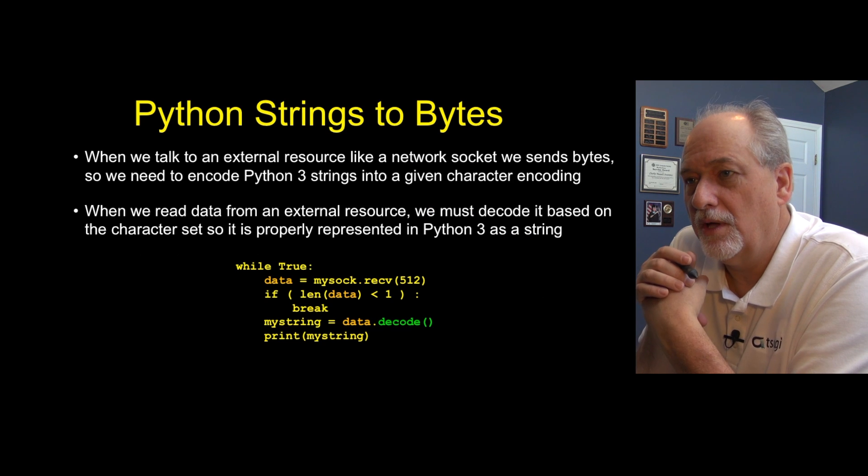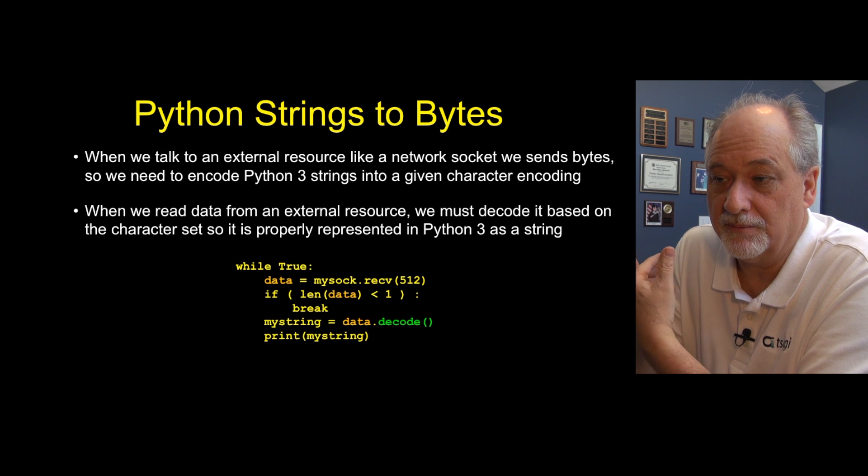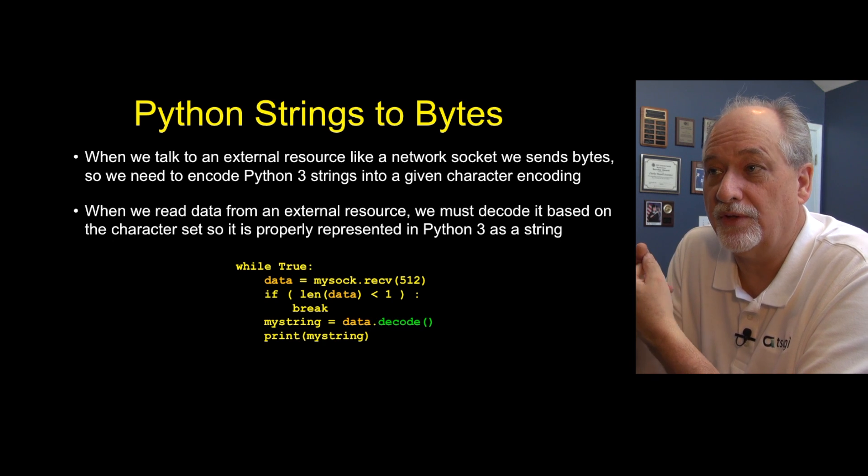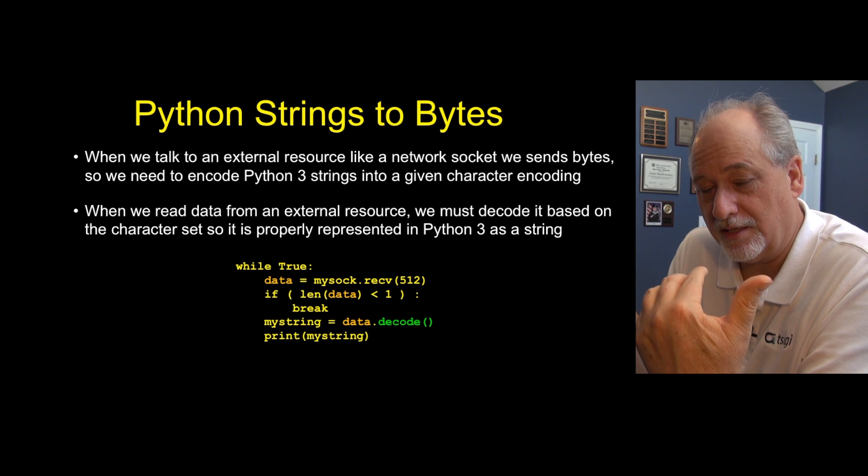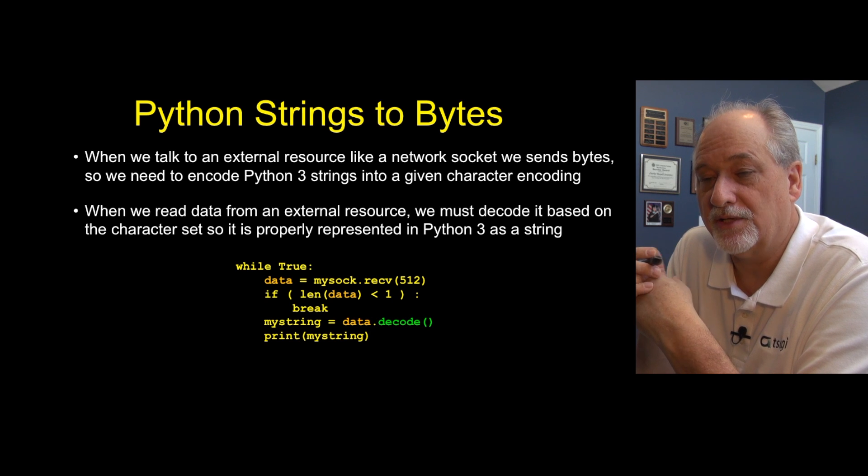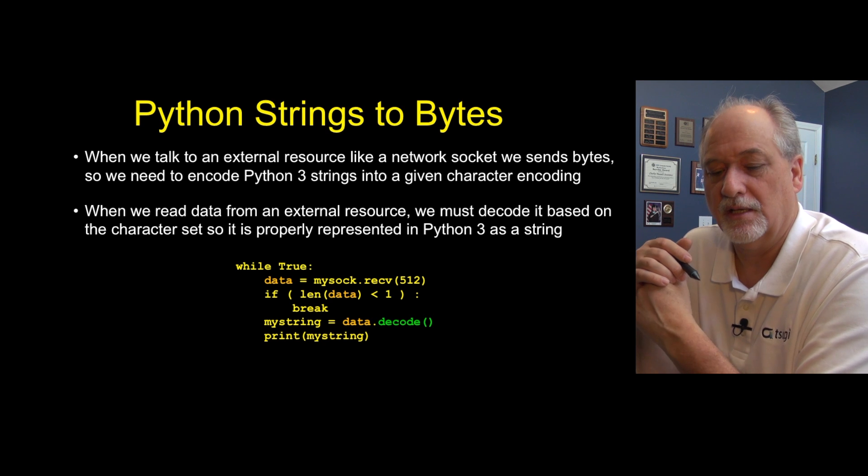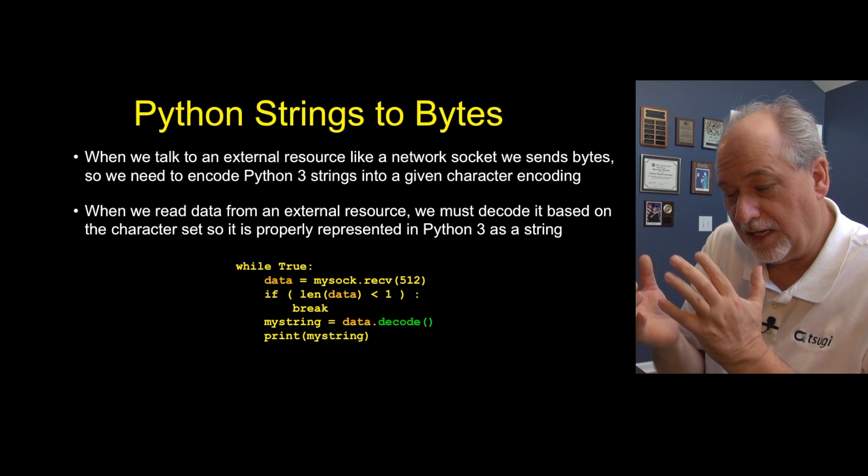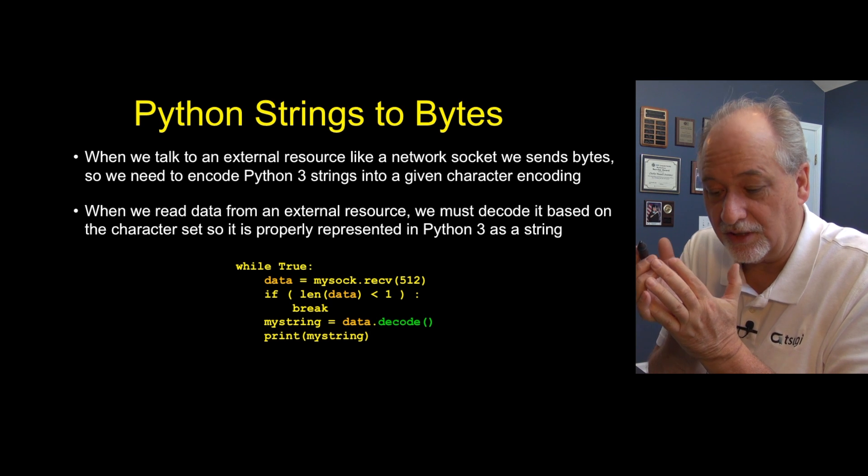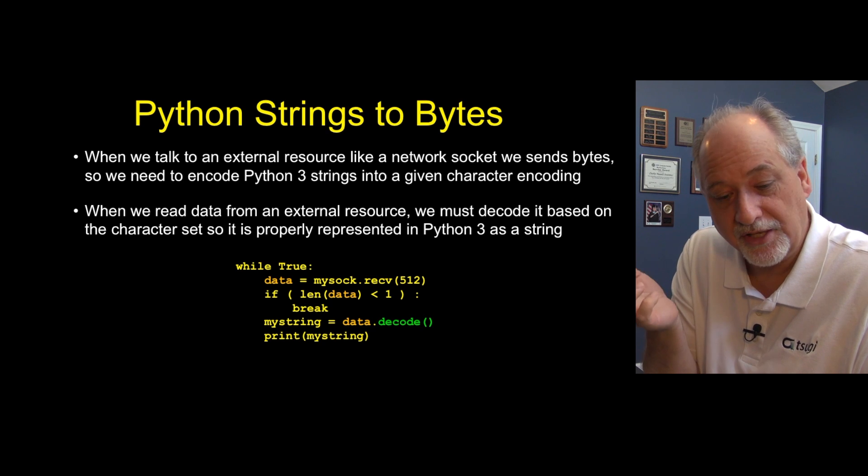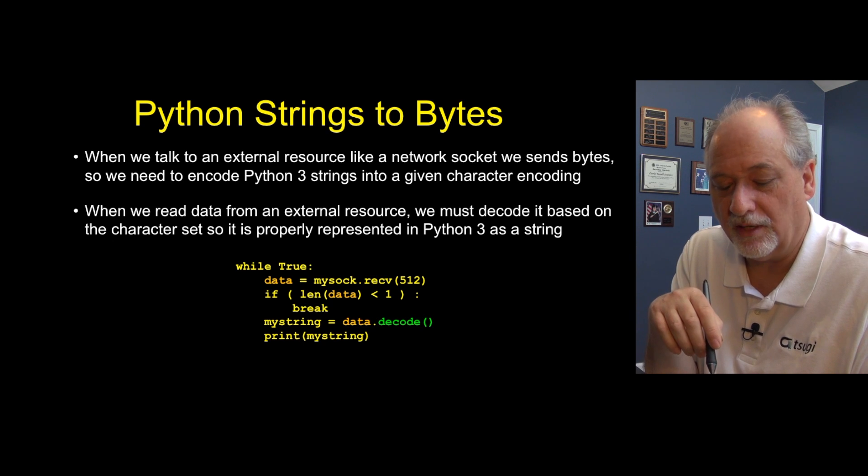And so if we are going to take data that comes off of the network in the bytes, then we have to make sure that we interpret it or decode it in the right way, so that internally the strings, which are Unicode, are properly represented. And so that's why when we read data in from a network connection like a socket, we have to say, hey, decode it. Now, there's a couple things going on at that moment of decode.